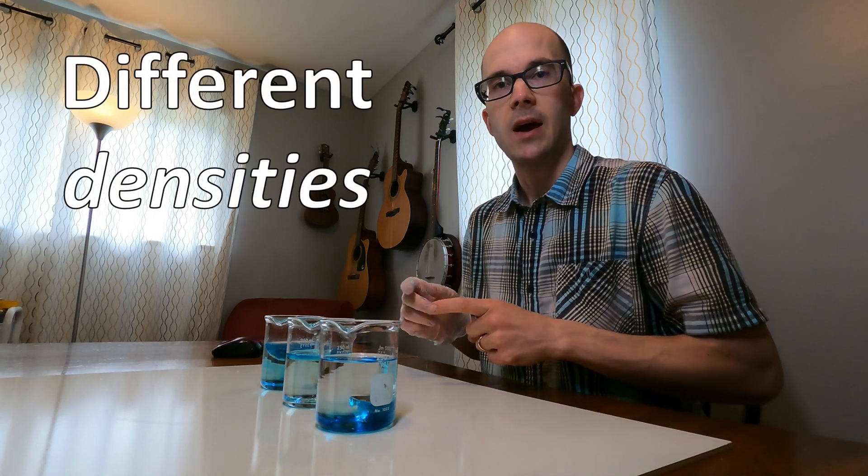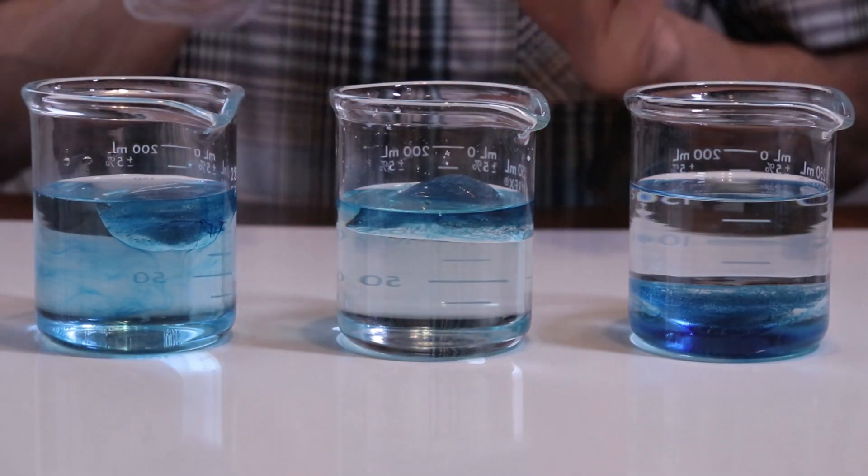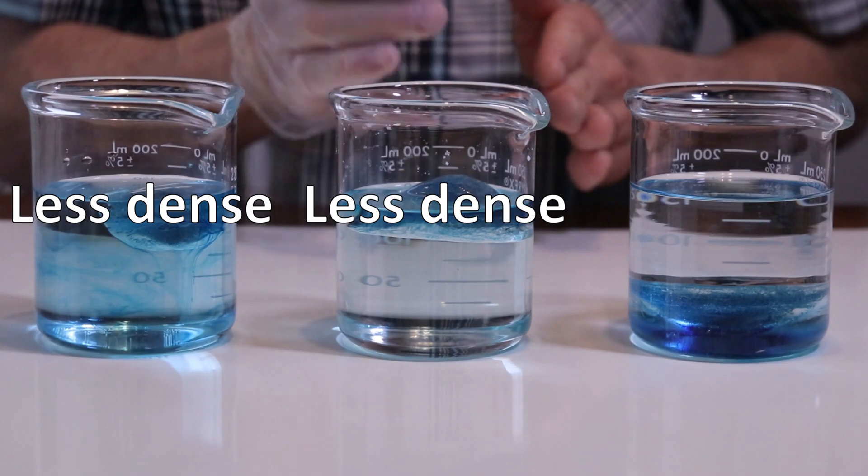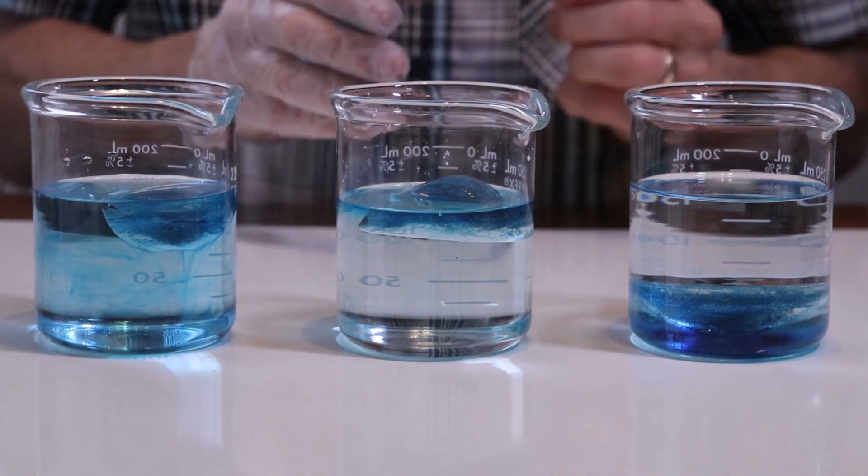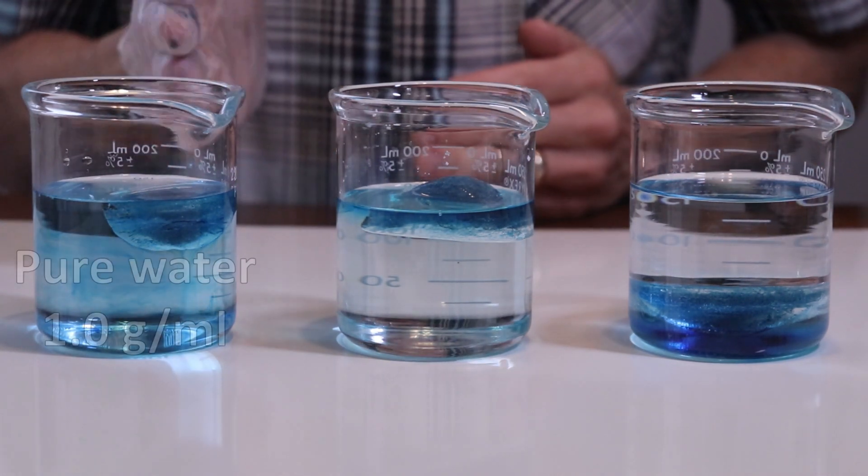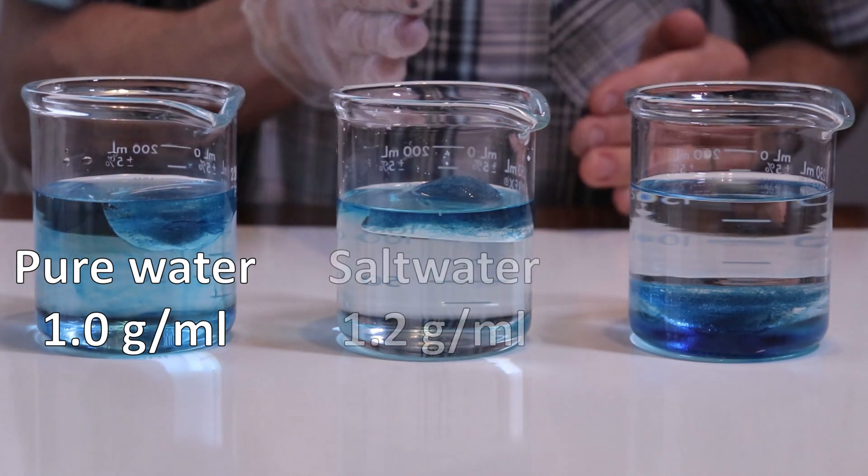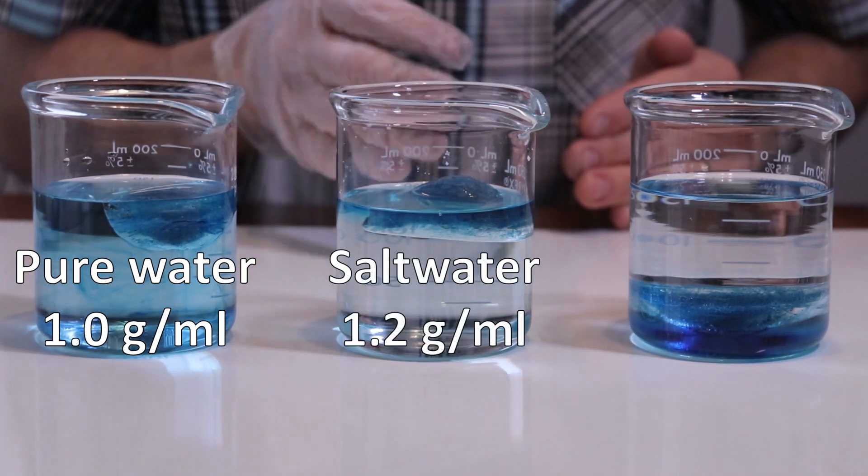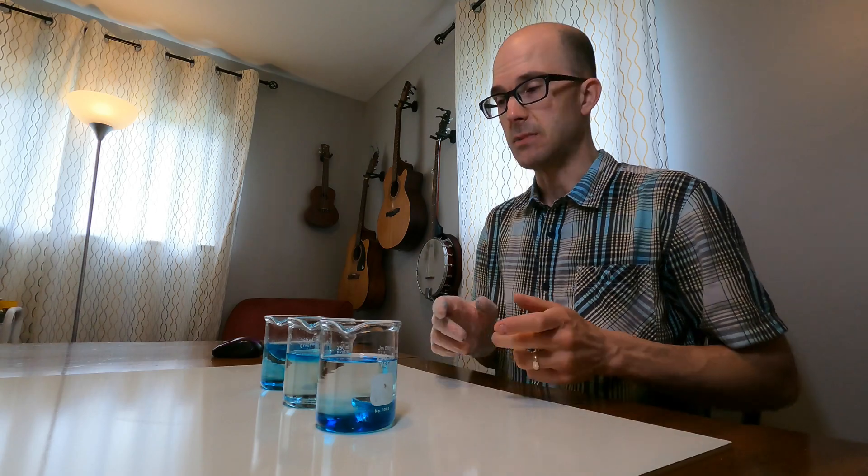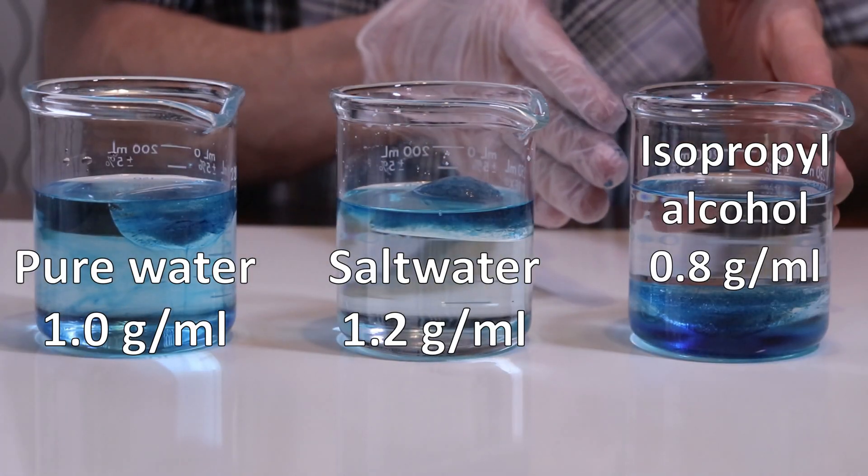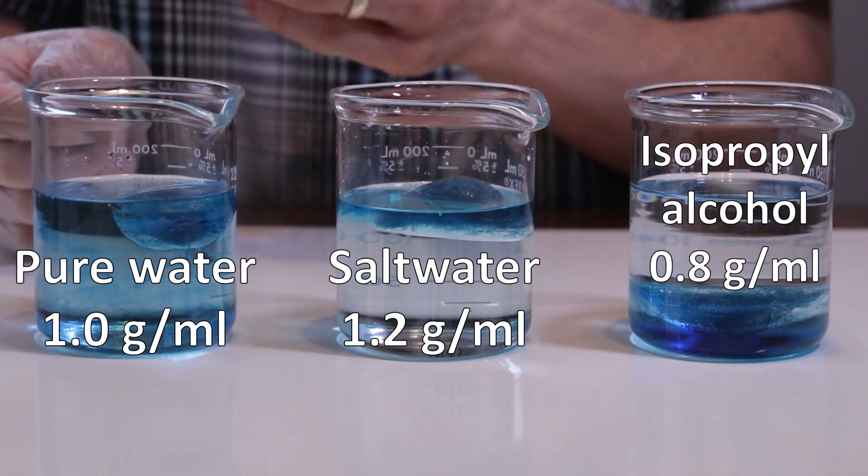What does this mean? These initial observations indicate that these different liquids have different densities. The ice floats on the fresh water and on the salt water because ice is less dense than those liquids. The ice sank in the alcohol because ice must be more dense than isopropyl alcohol. Just for reference, the accepted values for these different liquids are about 1 gram per milliliter for pure water, about 1.2 grams per milliliter for salt water, and then only about 0.8 grams per milliliter for isopropyl alcohol. This means that salt water is the most dense, alcohol is the least dense, and water is right between the two.